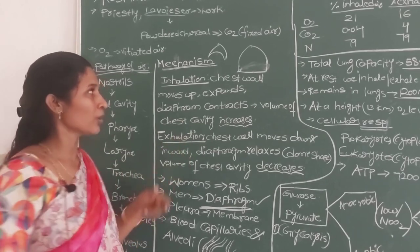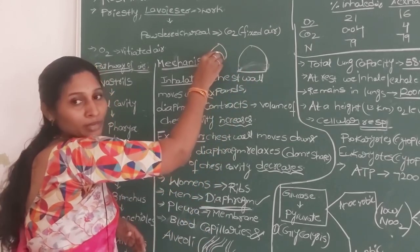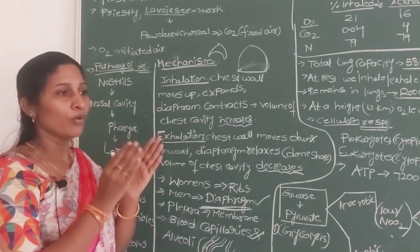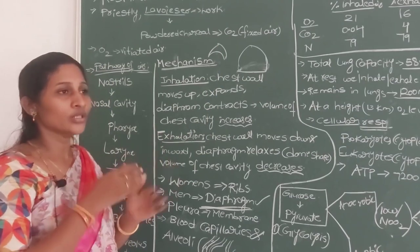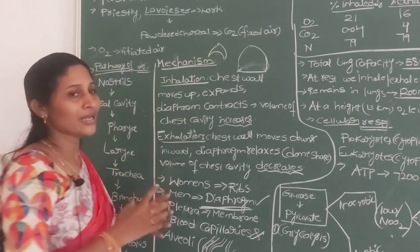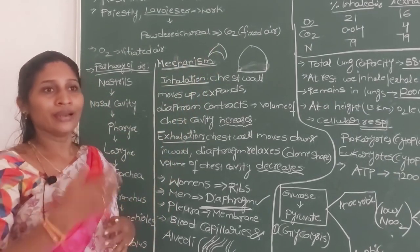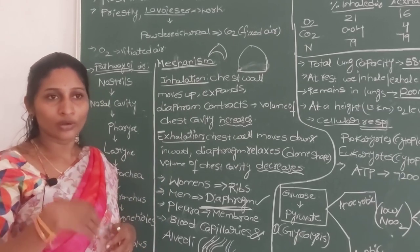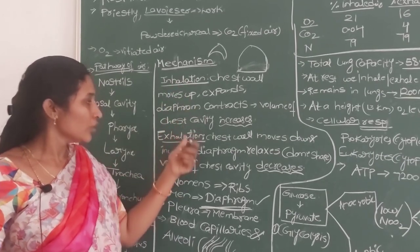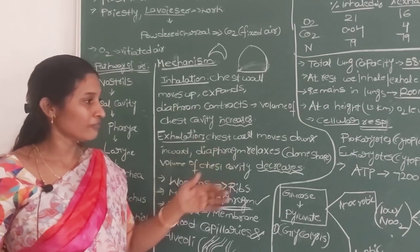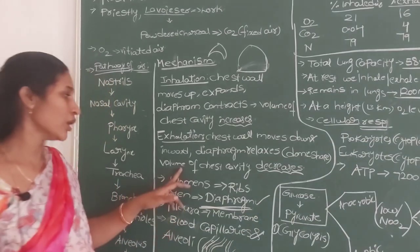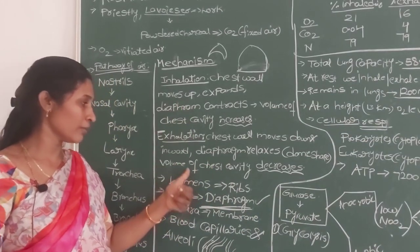The reverse happens during exhalation. The diaphragm relaxes back to its dome shape and the chest wall moves inward and downward. These changes decrease the space in the chest cavity, increasing pressure inside the lungs, so air is pushed out. Remember: during inhalation the diaphragm flattens and volume increases; during exhalation the diaphragm returns to dome shape and volume decreases.